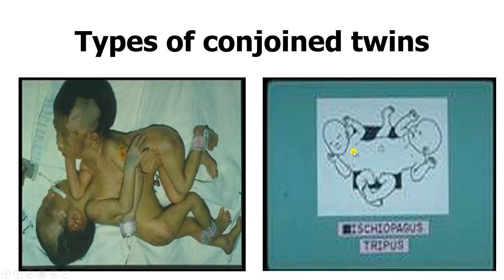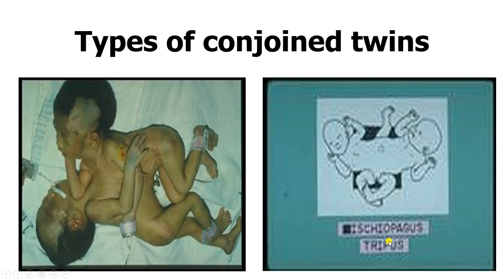You can also have fusion at the ischium with the lower limbs being independent on the sides — we call this ischiopagus trippus, with trippus referring to the fact that there are three different lower limbs. Sometimes you can have four lower limbs, though we still commonly call that ischiopagus trippus.